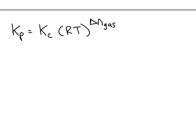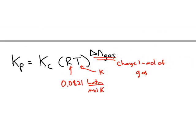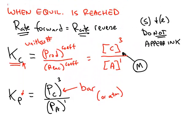Kp and Kc are related to each other by this formula. R is the gas constant, 0.0821, T is the temperature which has to be in Kelvin, and this exponent is delta N, which is the change in the number of moles of gas. When you do a change, it is always products minus reactants.